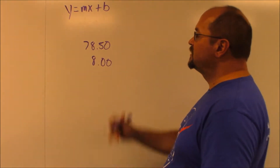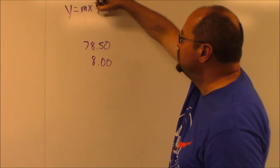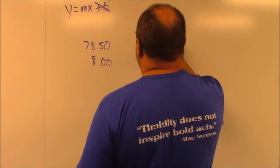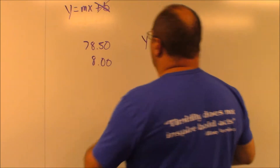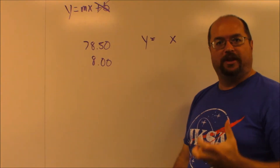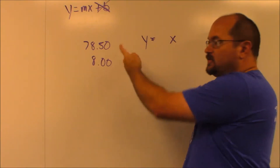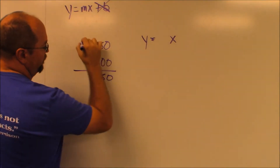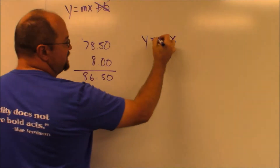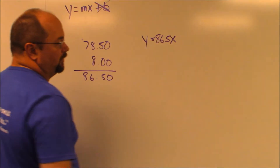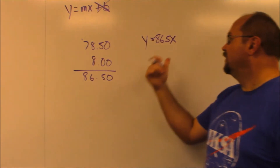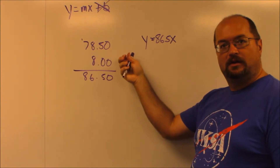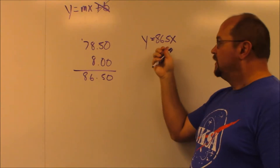We're just looking at the cost for each player, so we're not going to need that b value. We're just in y equals mx. The question now is, what is the m? Every player is going to need these two things, so it's just a matter of adding them up. Every player, it's going to cost them $86.50. So y equals 86.5x, because every single player is going to need these two things, and the total cost is the number of players times this amount.